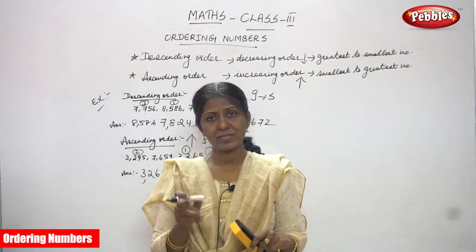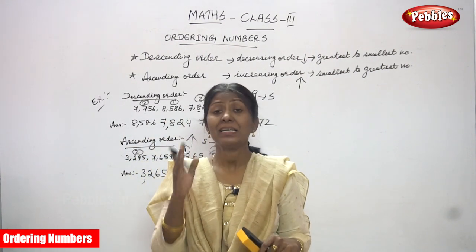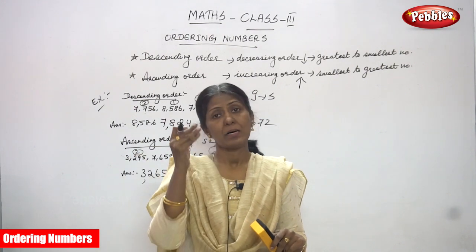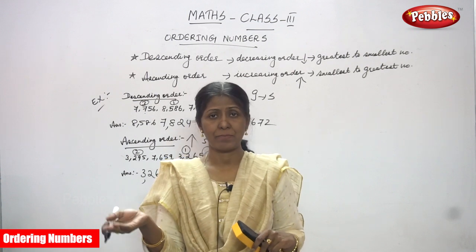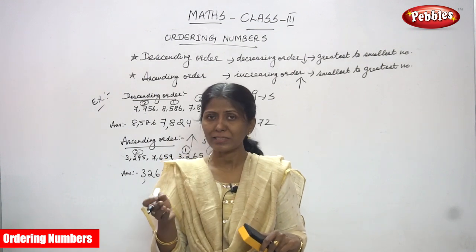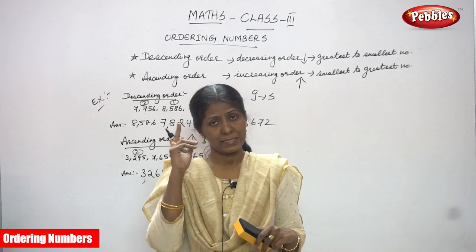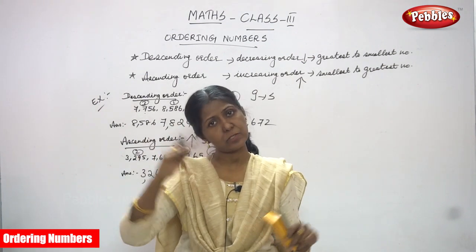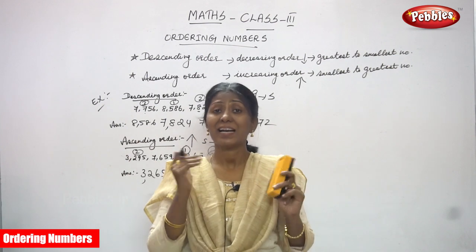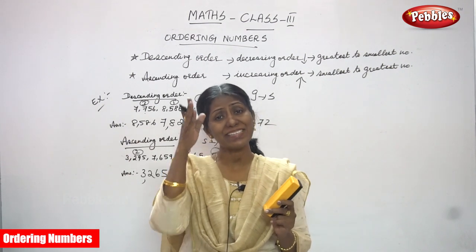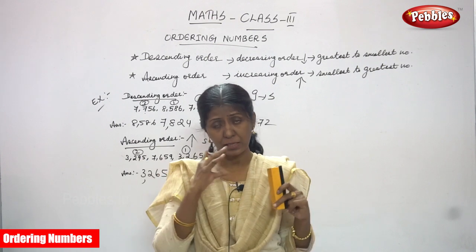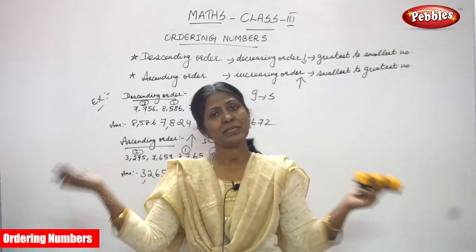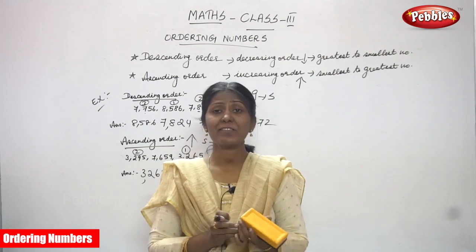Let me repeat once again. Descending means decreasing order — you have to arrange all the numbers from greatest to smallest. Ascending means you have to write all the numbers in increasing order — that means smallest to greatest. I think you understand very well.